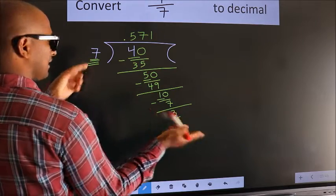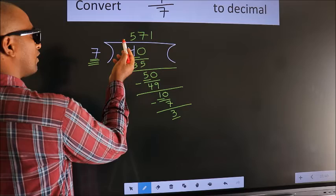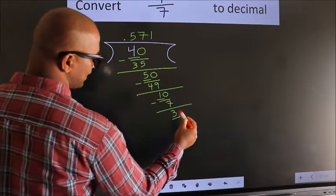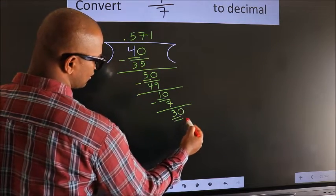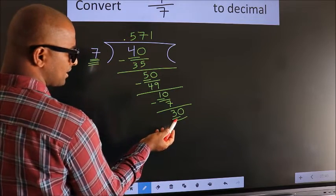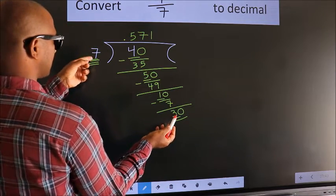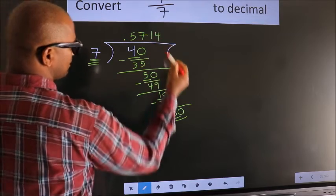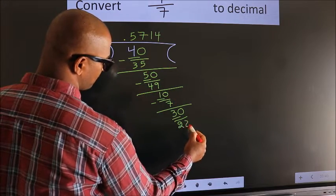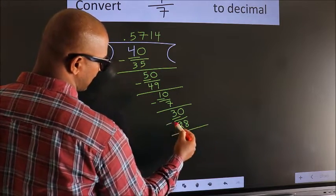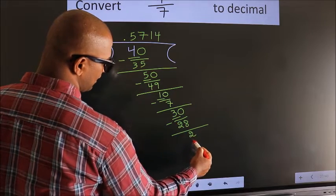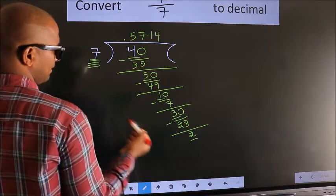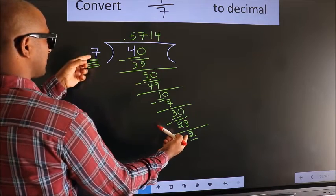We already have the decimal, so we can directly take 0, making it 30. A number close to 30 in the 7 times table is 7 fours, which is 28. Now we subtract and get 2. Here we have 2, and 2 is smaller than 7.